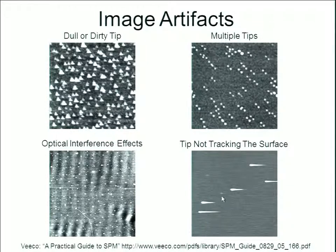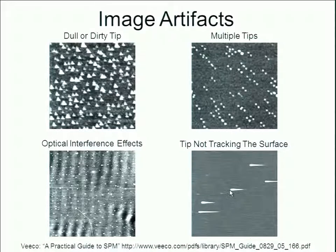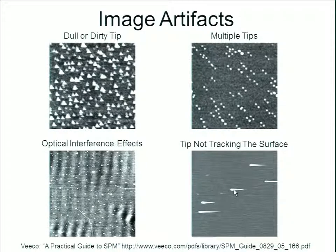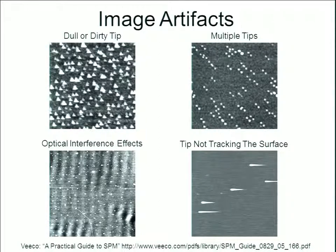In parachuting, since the feedback loop is not set up correctly, as you scan from left to right, your tip does a good job tracking the surface going up the particle. But instead of falling back down quickly on the backside, it takes a long time to return to the surface because the feedback loop is off and you're not maintaining that constant tip-sample interaction. The particle ends up looking like a teardrop shape instead of a sphere.